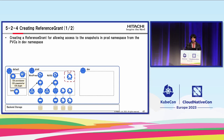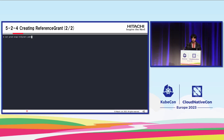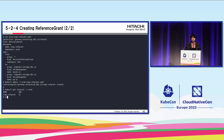Step four: create a Reference Grant. This step creates a Reference Grant to allow access to the snapshots in the prod namespace from the PVCs in the dev namespace. In the Reference Grant, confirm that PersistentVolumeClaim is set as the kind in the 'from' section and VolumeSnapshot is set as the kind in the 'to' section. After that, confirm the Reference Grant YAML was deployed and created successfully.